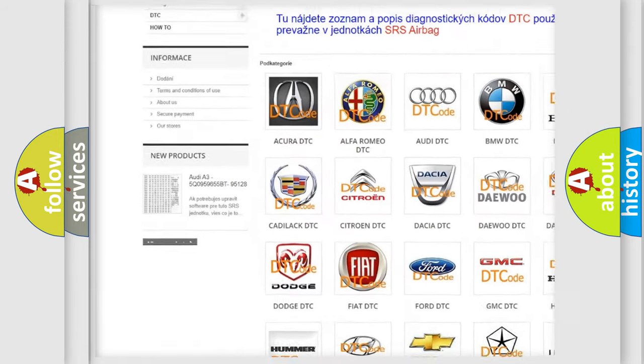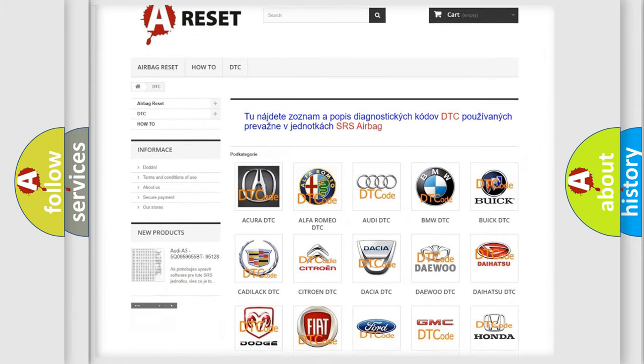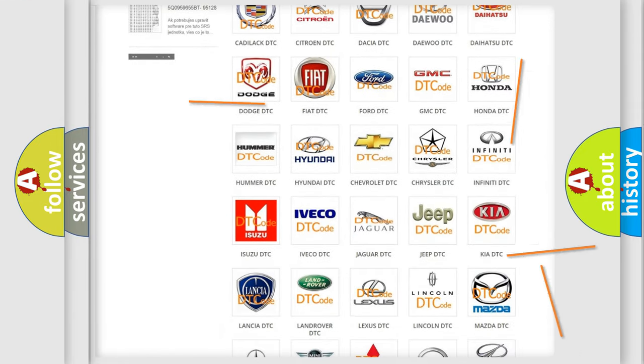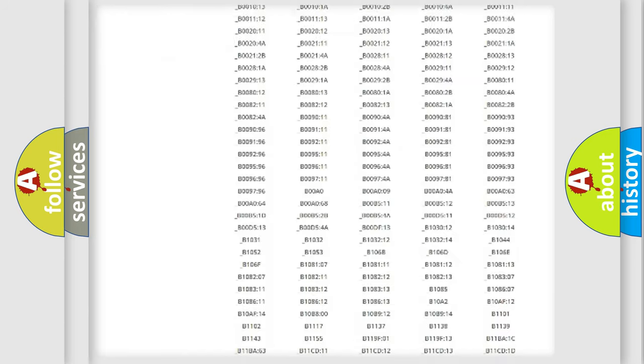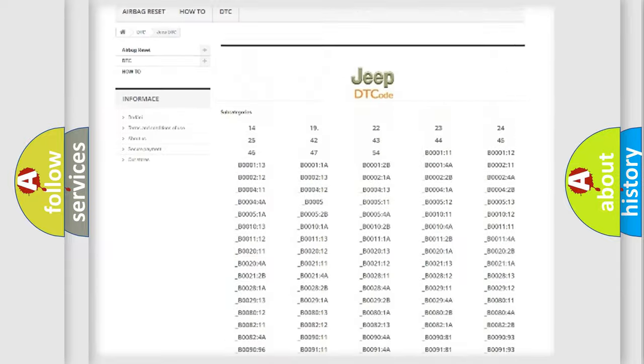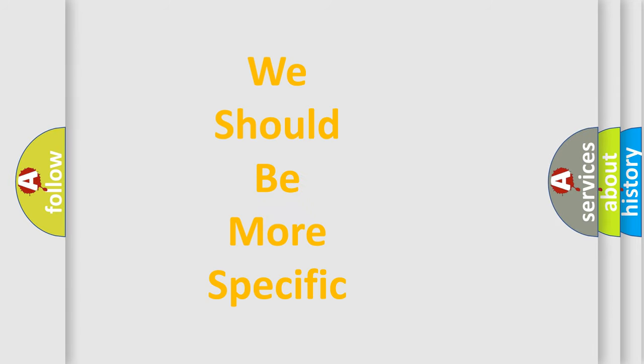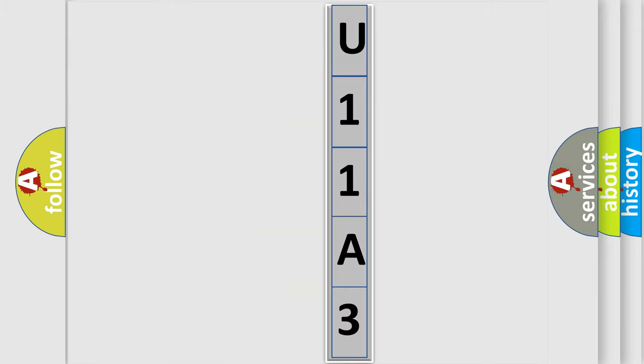Our website airbagreset.sk produces useful videos for you. You do not have to go through the OBD2 protocol anymore to know how to troubleshoot any car breakdown. You will find all the diagnostic codes that can be diagnosed in Jeep vehicles, and many other useful things. The following demonstration will help you look into the world of software for car control units.